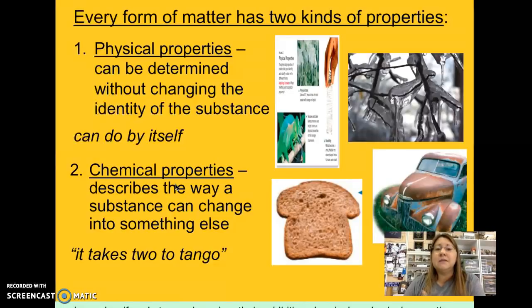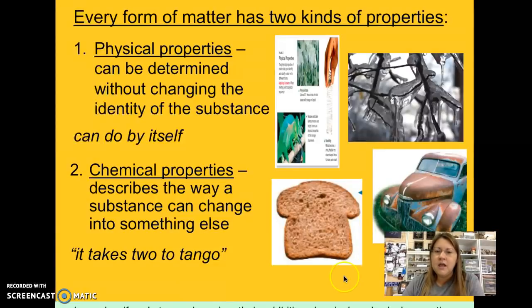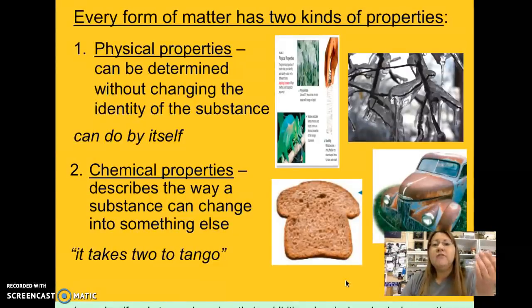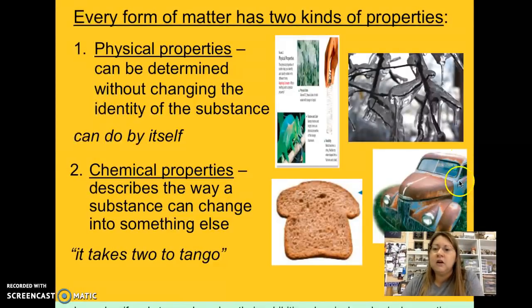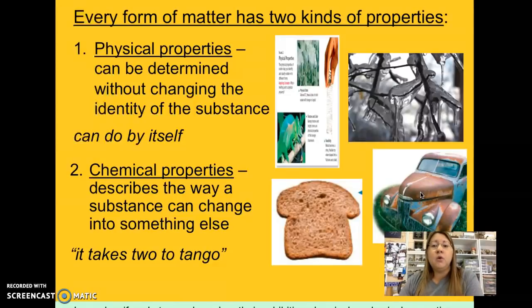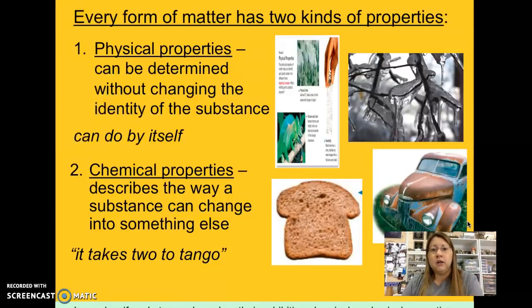Chemical properties, however — something has to be done to the substance for you to know it has that chemical property. When you have bread, you have to mix up the ingredients, let it rise — it's a gooey thick batter — and then you have to bake it for it to turn into bread. You don't know that it can turn into bread until it has baked, until heat has been applied. Another example is this car: the metal has rusted. That rust is a new substance forming — it's no longer the original iron-based metal, but rust has formed from the interaction of iron, water, and oxygen in the air.